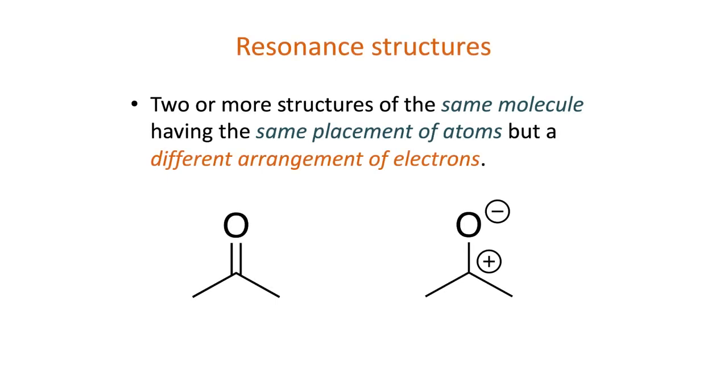Resonance structures are two or more structures of the same molecule, having the same placement of atoms but a different arrangement of electrons, typically only involving pi bonds and non-bonding electrons, or lone pairs.